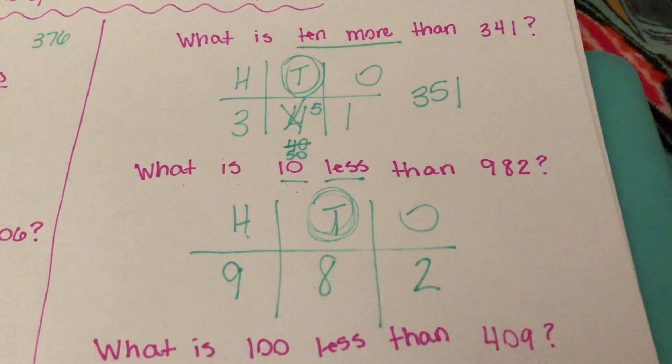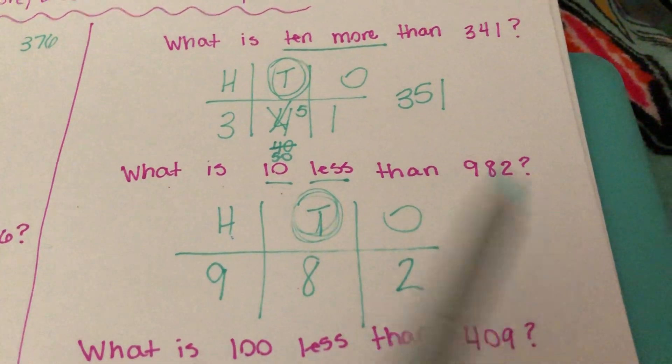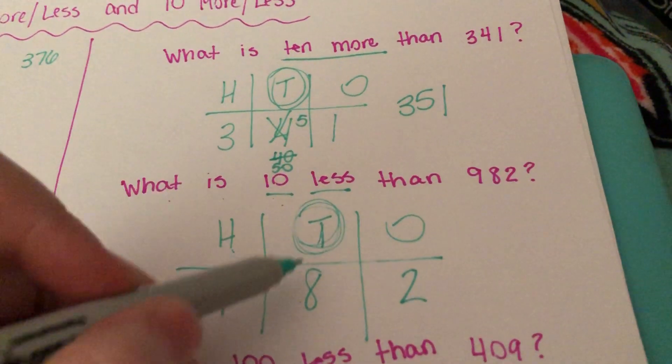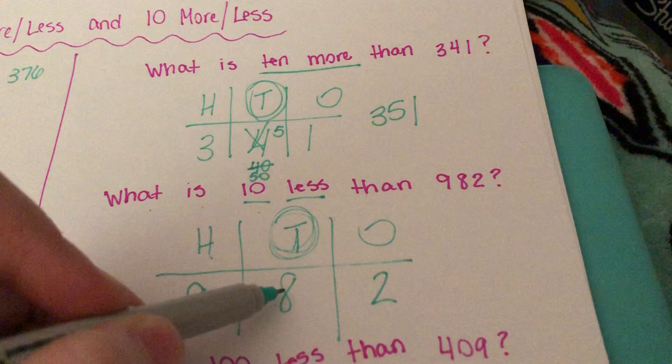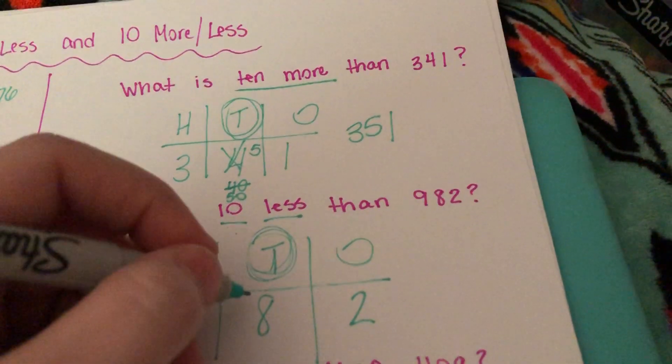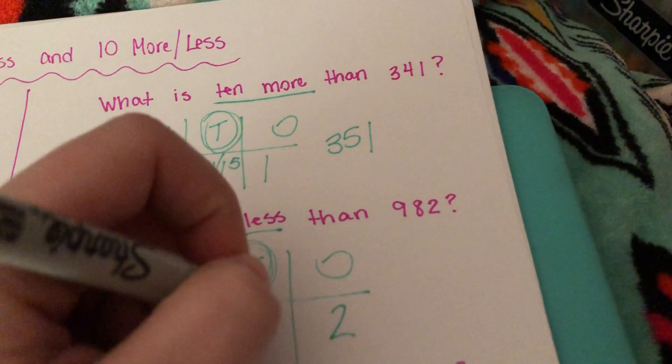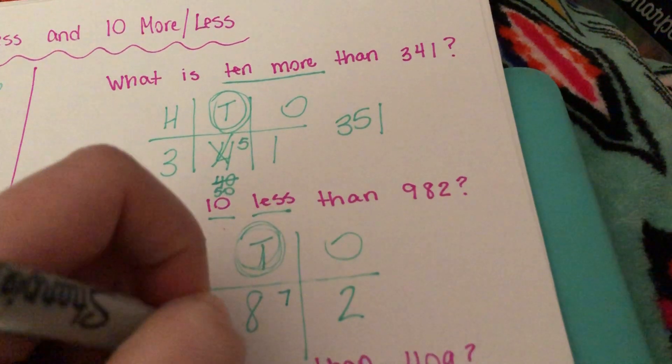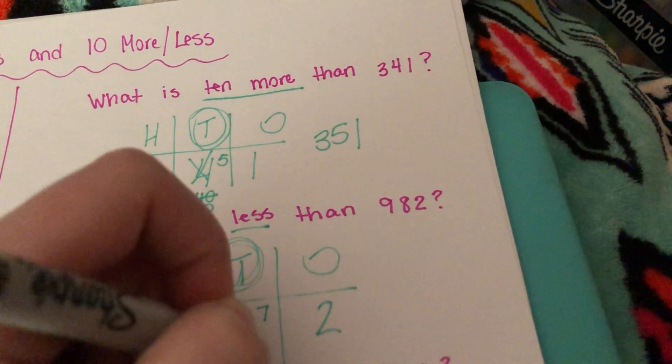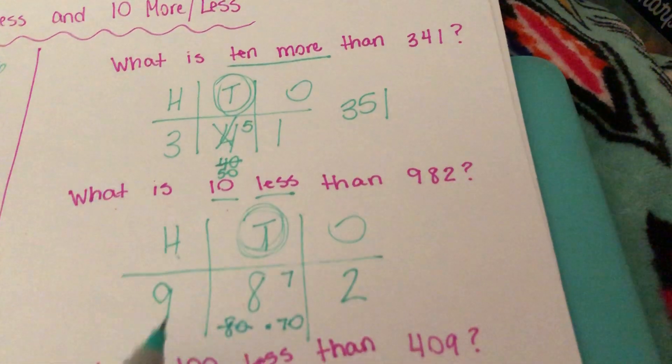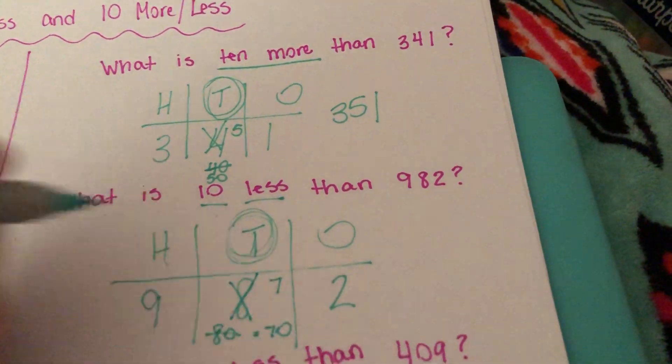10 less than 982. Well, we know that if we have eight tens, we need to go 10 less than that. So 10 less than eight tens is seven tens because we know that 80 take away 10 equals 70. So instead of 982, we're going to have 972.